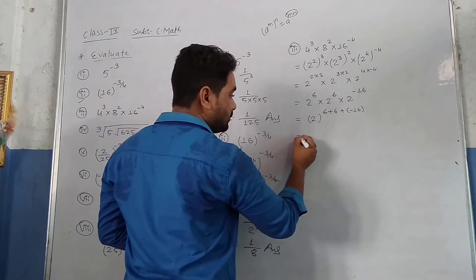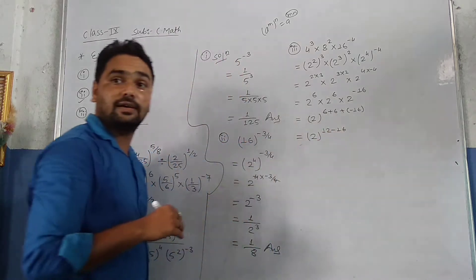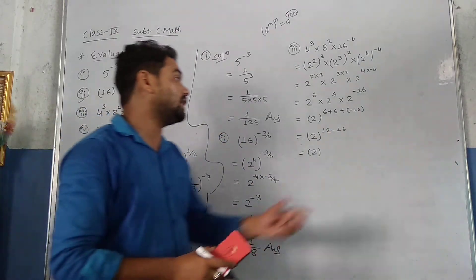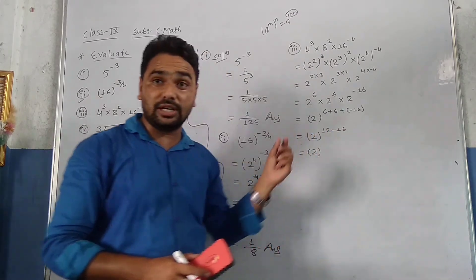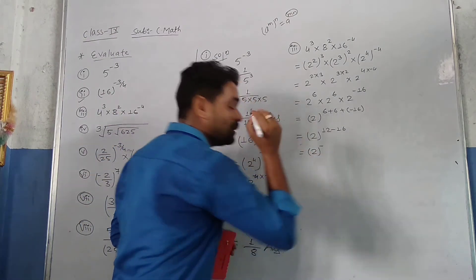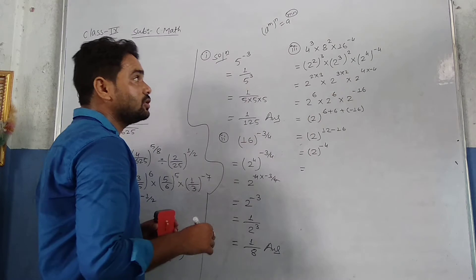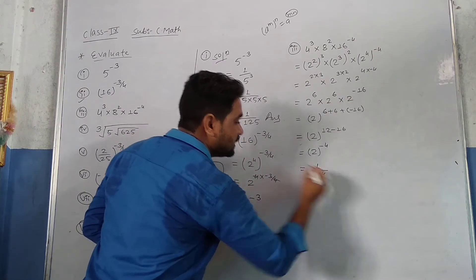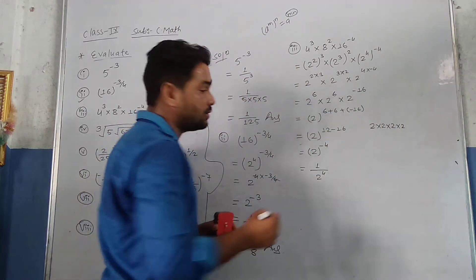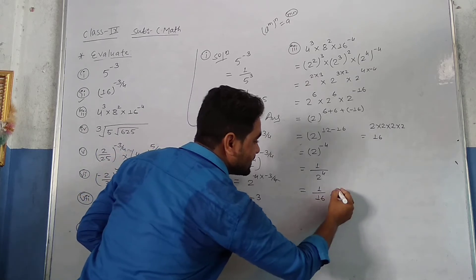So 2 power 6 plus 6 gives 12, and plus minus 16 — the minus sign applies and we subtract: 16 is greater, so minus is the sign, and 16 minus 12 gives 4. So we get 2 power minus 4. To make it positive, it goes to the denominator: 1 upon 2 power 4. And 2 to the 4 is 2 into 2 into 2 into 2, giving 16. So we get 1 upon 16. That is our answer.